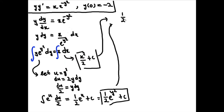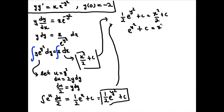So now we have both parts: one half e to the y squared plus C equals x squared over 2 plus C. We can multiply both sides by 2, which gives us e to the y squared plus 2C equals x squared plus C. These are just two arbitrary constants — they can be combined into one, so we get rid of one and represent it with just a single C.